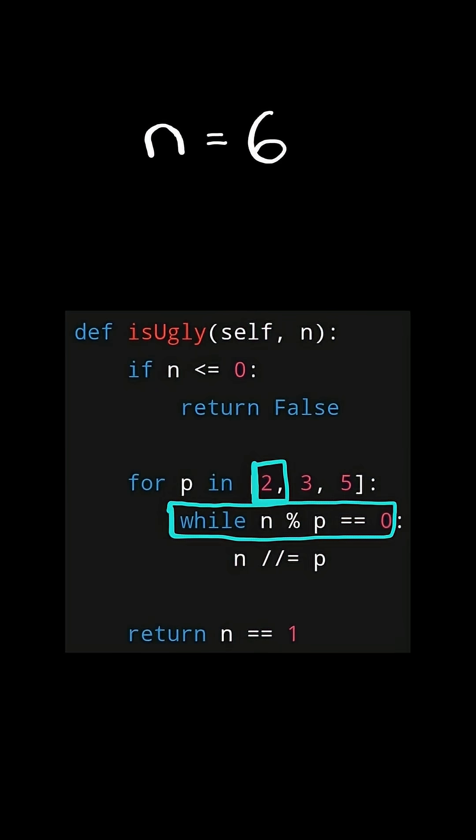We check if the factor is divisible by n. In this case, n is divisible by 2. So we then divide n by 2 and this gives us 3. And we keep checking, is n divisible by the prime factor 2? In this case, 3 is not divisible by 2. So we continue to the next prime factor.